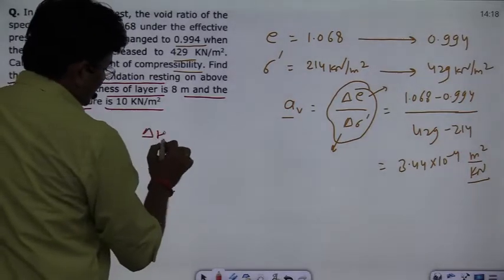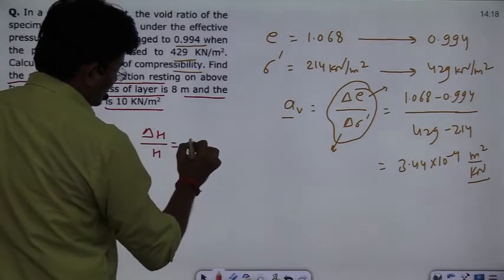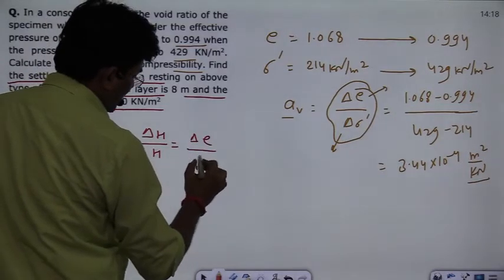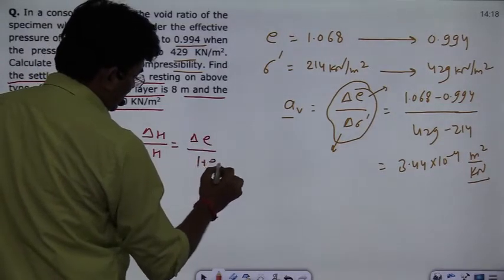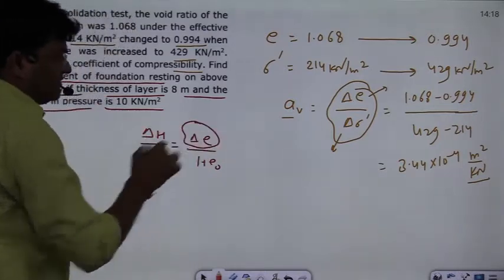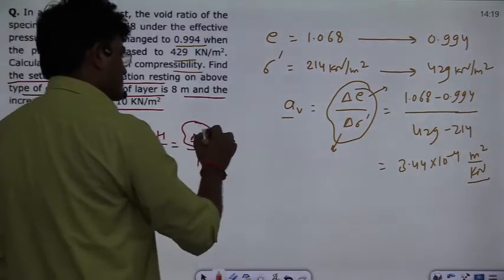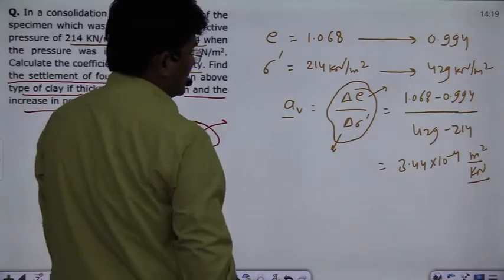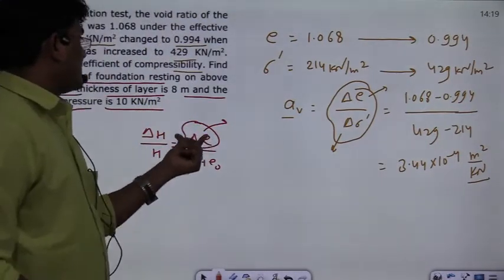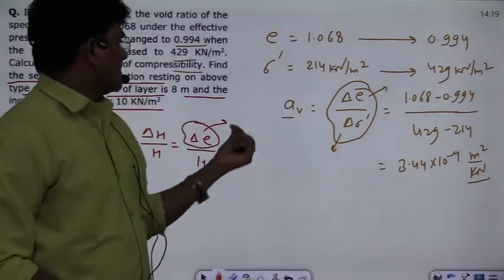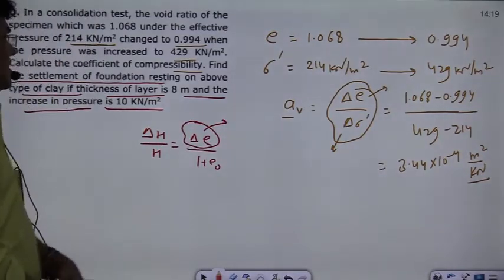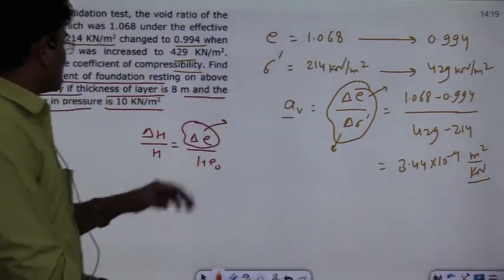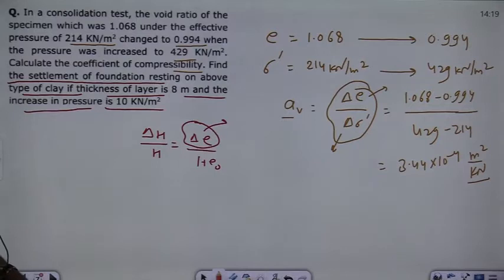For the consolidation settlement, the equation you all know, delta H upon H is equal to delta E divided by 1 plus E naught. Now the current result is you would be able to calculate the total value. If you use delta E from here, then you will have a AV factor.